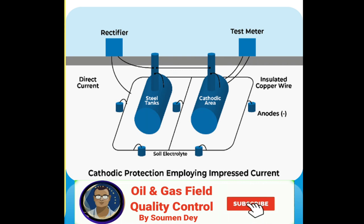Why is ICCP better than sacrificial anodes? Compared with sacrificial anodes, ICCP anodes can provide significantly more productive current at a higher driving voltage. This increased capacity is often necessary to maintain protection polarization in low conductivity conditions, such as in brackish water. Also, sacrificial anodes need to be changed periodically, whereas ICCP has a longer life to protect the pipeline.